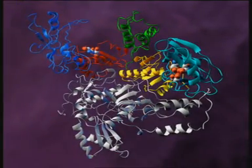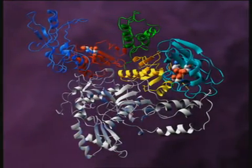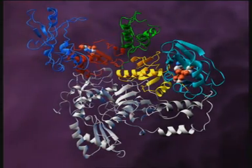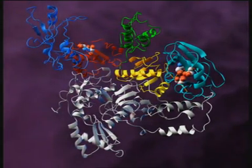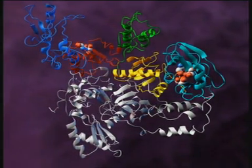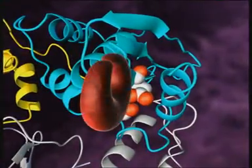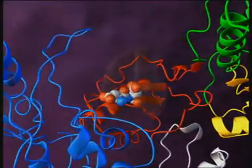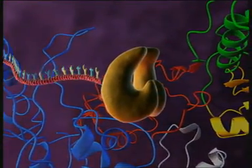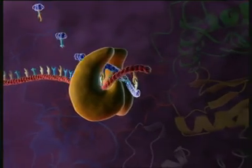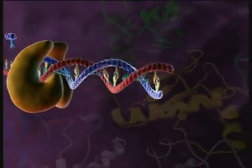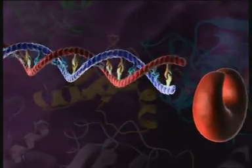Reverse transcriptase begins the reverse transcription of viral RNA. It has two catalytic domains: the ribonuclease H active site and the polymerase active site. Here, single-stranded viral RNA is transcribed into an RNA-DNA double helix.